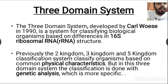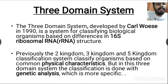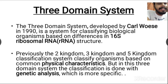All living organisms in the world are classified according to their differences in 16S rRNA sequence into three domains. The 16S rRNA is used because it is specific and conserved within a species — all organisms within a species share the same 16S rRNA sequence.